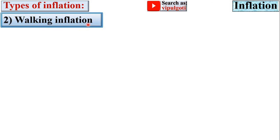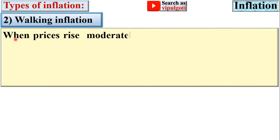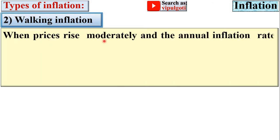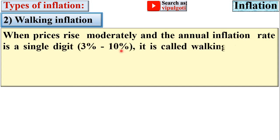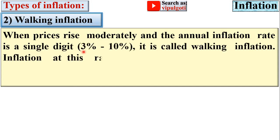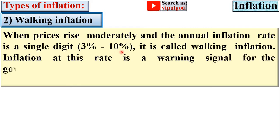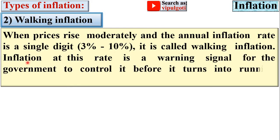Next, walking inflation. When prices rise moderately and the annual inflation rate is a single digit, that means from 3% to 10%, it is called walking inflation. Inflation at this rate is a warning signal for the government to control it before it turns into running inflation.